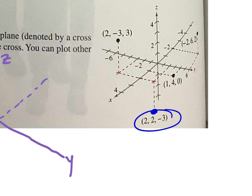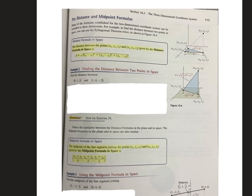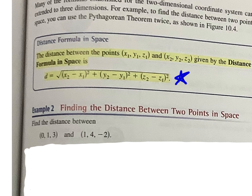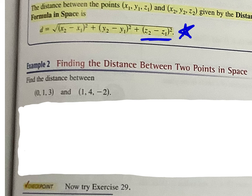Next, we're going to be asked to find the distance between two points. Our distance formula is the same as before, but we add z to it. So instead of the square root of (x2 minus x1) squared plus (y2 minus y1) squared, we also add (z2 minus z1) squared under the square root. It's the same distance formula — we just include z.